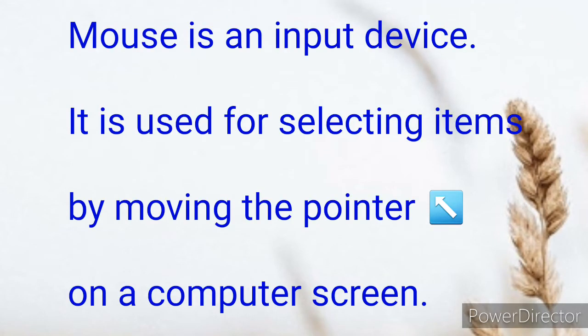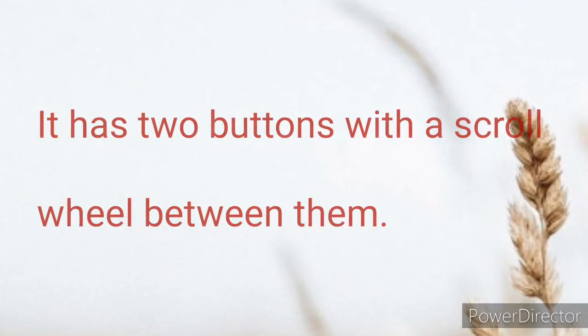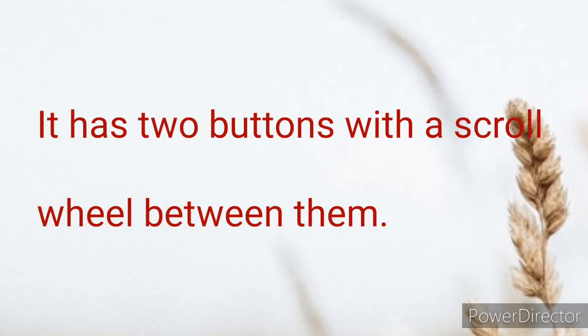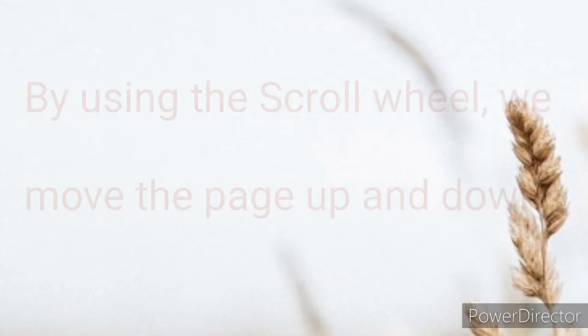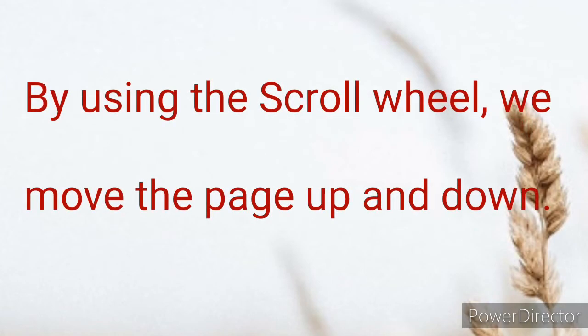A mouse is an input device. It is used for selecting items by moving the pointer on a computer screen. It has two buttons with a scroll wheel between them. By using the scroll wheel we can move the page up and down.